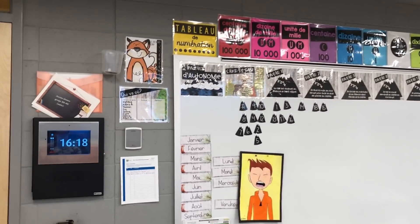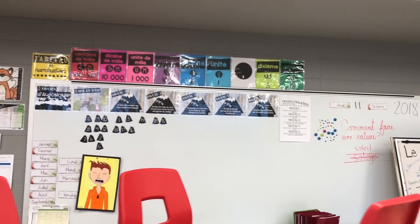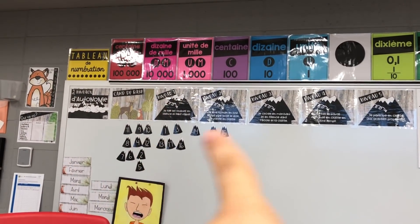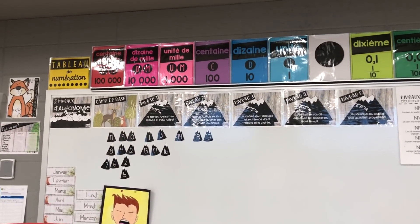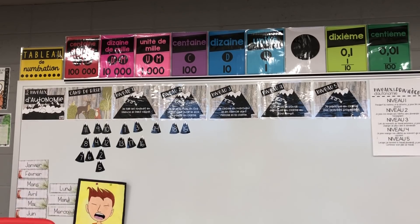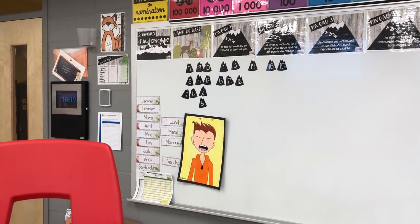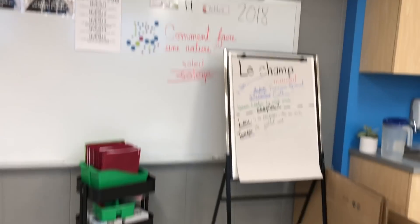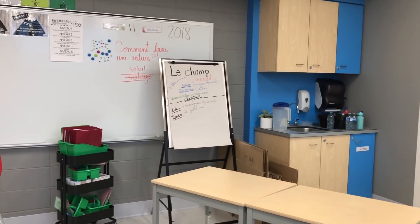Quand je me déplace vers la droite, j'ai un premier grand tableau blanc ici — il est vraiment énorme, il fait le mur au complet. Sur ce tableau, j'ai mes niveaux d'autonomie. En haut, j'ai le tableau de numération de Karine, et chaque position a une couleur différente, ce que je trouve intéressant pour les identifier plus facilement. J'ai des étiquettes pour la date et les mois. Plus à droite, c'est mon genre de coin d'écriture, mais je manque d'espace parce que j'ai trop de tables.